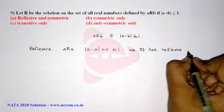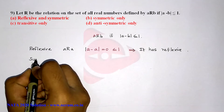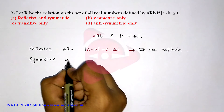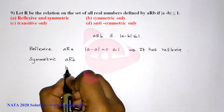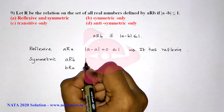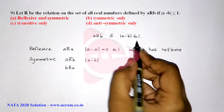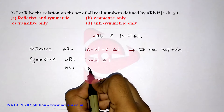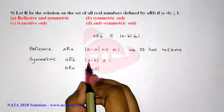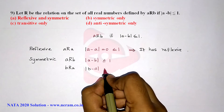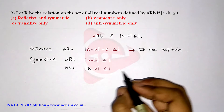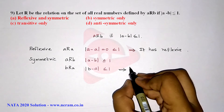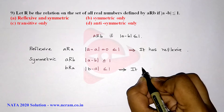Next, we check for symmetric. Symmetric means if aRb then bRa. Modulus of a minus b is less than or equal to 1, and modulus of b minus a equals modulus of a minus b, which is also less than or equal to 1. So the given relation is symmetric.